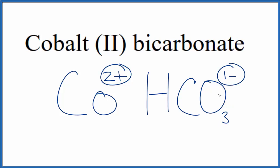The way we could do that is we could put a 2 out here. If we had two of these bicarbonate ions here, 2 times 1 minus, that would give us 2 minus, that would balance the 2 plus.